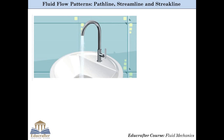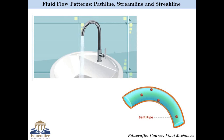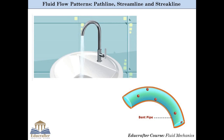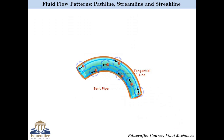Let us consider an example of fluid flowing through a bent pipe. Focusing our attention on one small segment of this bent pipe, it is seen that fluid particles move along the curved path at different velocities. Here you can see the velocity vectors of a few specific fluid particles in the domain at some specific instant of time.